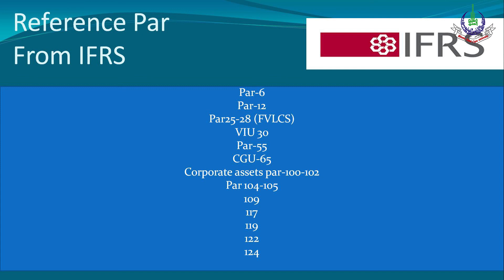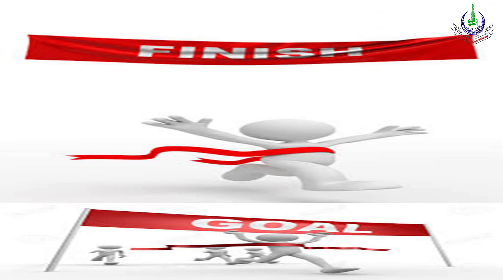Paragraph 55 (pre-tax discount rate), paragraph 65 (CGU detail), paragraphs 100 to 102 (corporate asset allocation), paragraphs 104 to 105 (allocation of impairment loss), paragraph 109, 117, 119, 122, and 124. Please go through these paragraphs. Inshallah next time we will discuss more of IAS 36 and its application in the coming sessions. Take care. Allah Hafiz. Thank you.